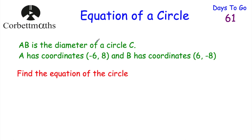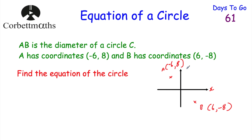Next question: AB is the diameter of a circle with centre C. A has coordinates (−6, 8) and B has coordinates (6, −8). We've been asked to find the equation of the circle. To begin, let's find the centre. To find the midpoint of two coordinates, we add them together and halve. Negative 6 plus 6 is 0, halved is 0; and 8 plus negative 8 is 0, halved is 0. So the centre is the origin.